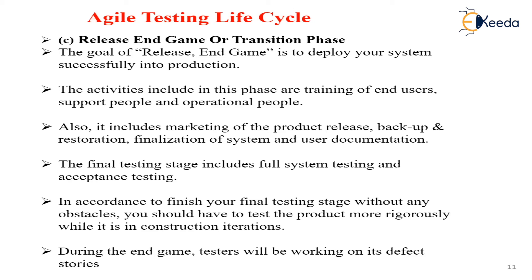You should test the product more rigorously - it is exhaustive work. One construction iteration is not enough. During the end game, the tester works on defects. In case of any defect, you go back and start again. In this way, we finish with the Agile Testing Life Cycle.